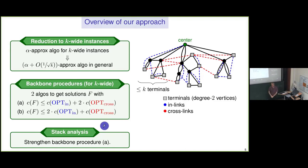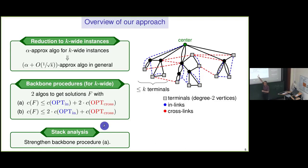There was a question about whether integrality gap examples are not K-wide. When you have any integrality gap example, it is a fixed instance of constant size, so I can pack it into one of those K-wide instances. I can claim it's K-wide for K large enough but still constant.